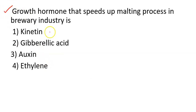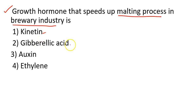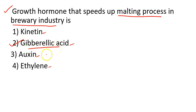The next question is: the growth hormone that speeds up the malting process in the brewing industry is — this is one of the first applications covered in the plant growth and development chapter. The four options are: kinetin, gibberellic acid, auxin, and ethylene. The correct answer is gibberellic acid. Gibberellic acid functions in the malting process used in the brewing industry.